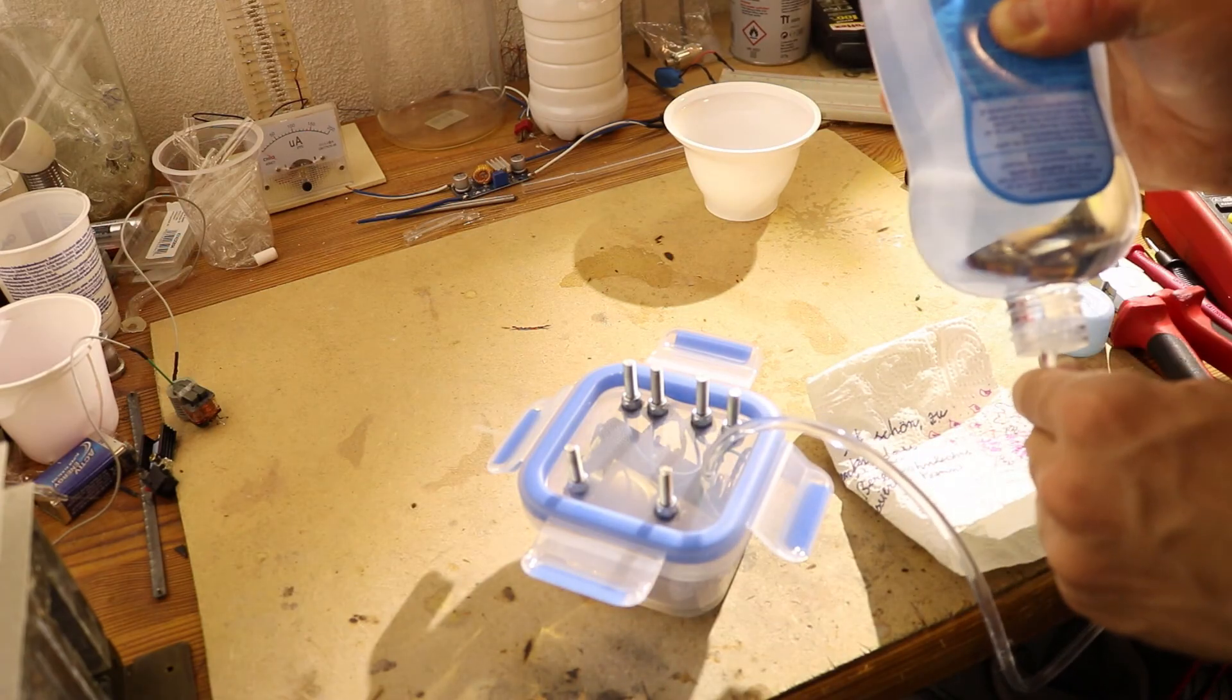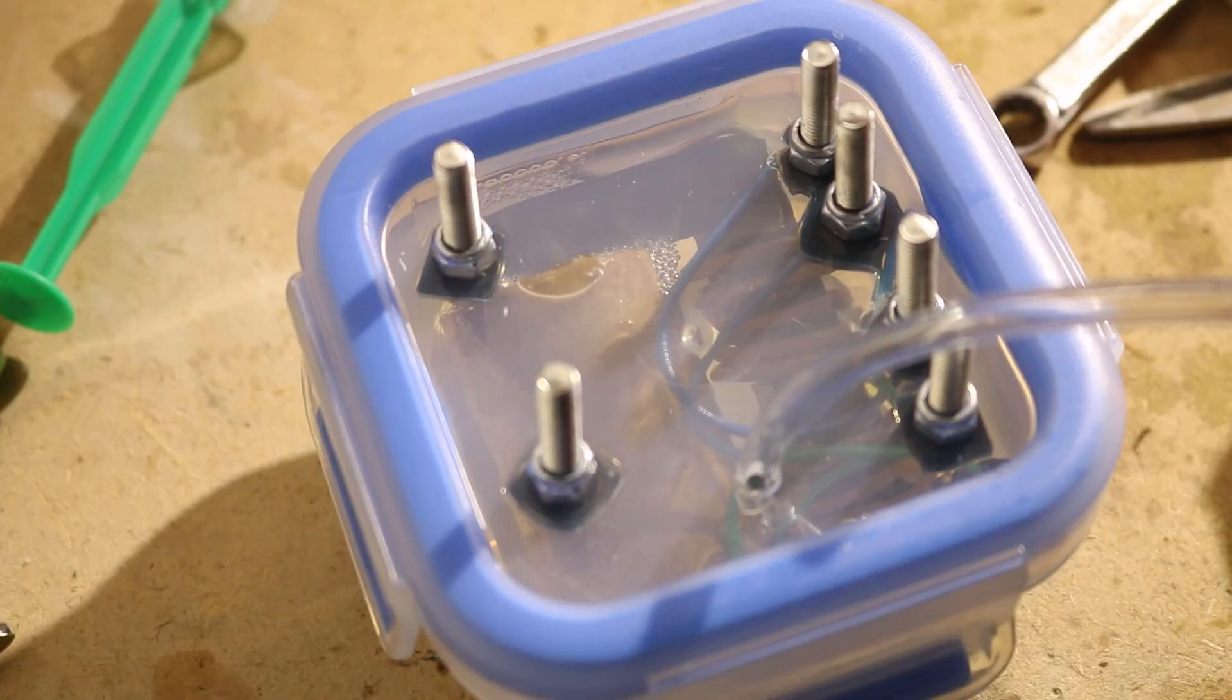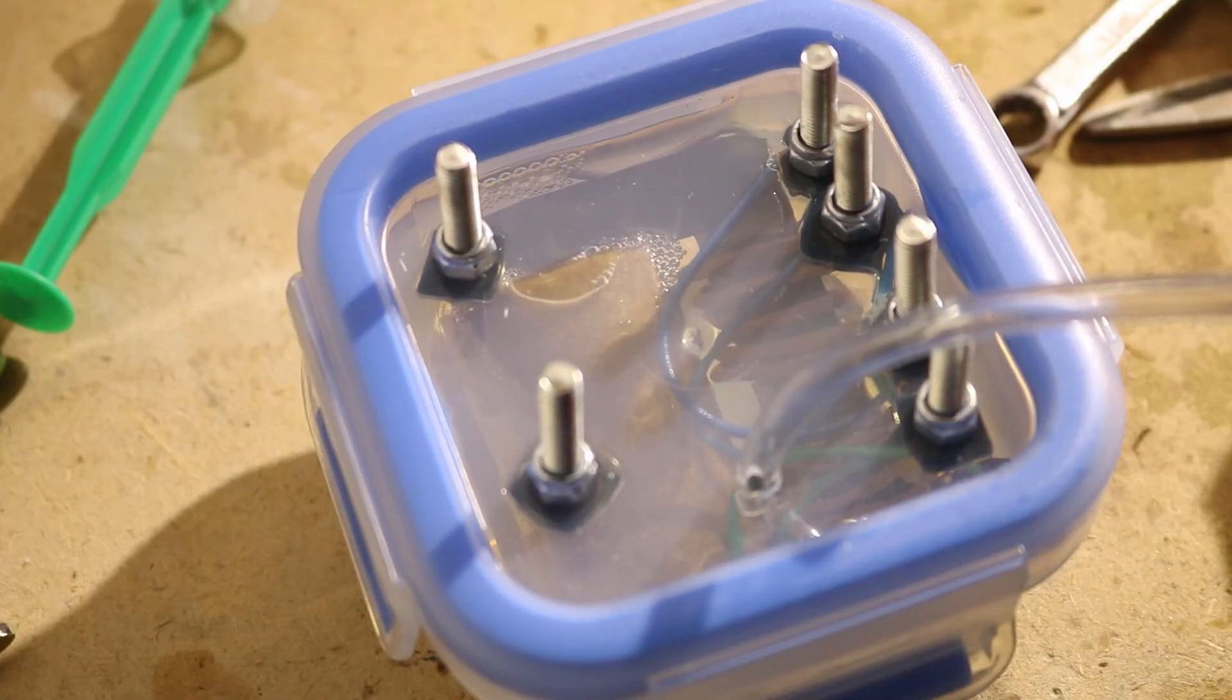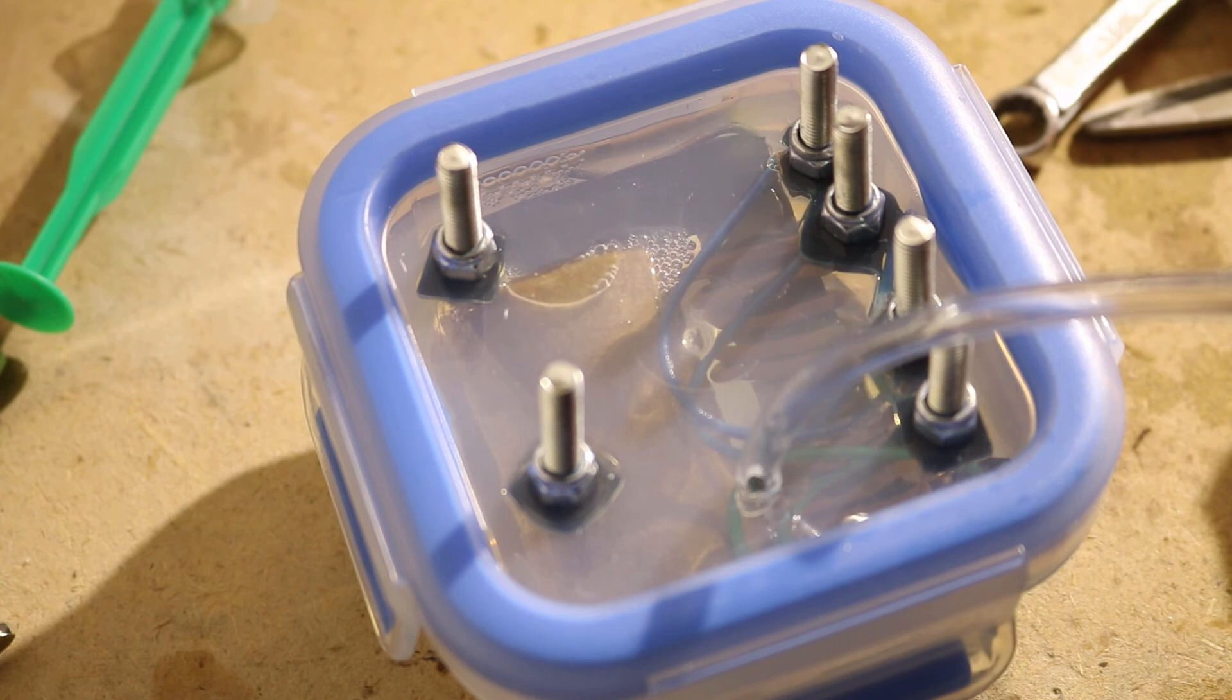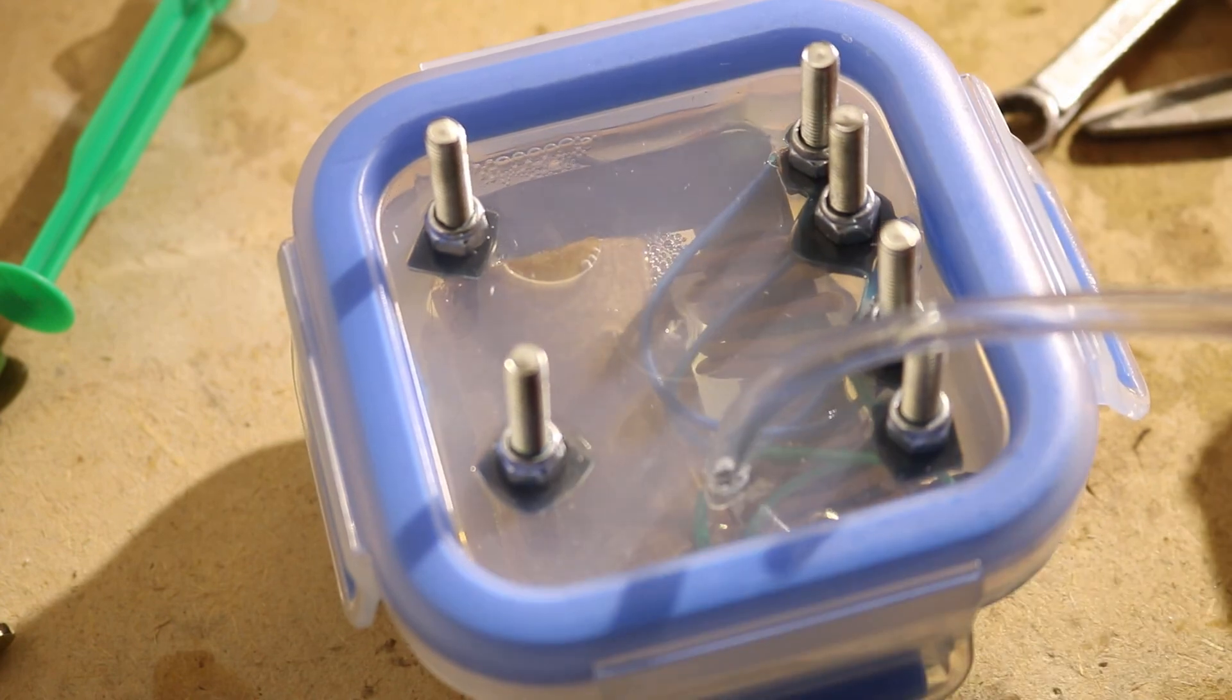I then filled the container with paraffin oil and sucked the air out but the container wasn't 100% tight so it bubbled a bit through the holes where the screws are. But this gets all the air out that's trapped in the secondary coil.